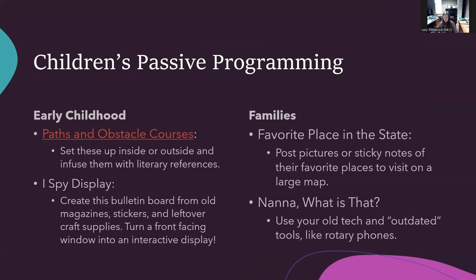Bonus idea: toddler play. Transform a simple table into a corner with bubbles, play dough, egg shakers, scarves, and puzzles — allowing kids and parents to make new friends at the library. For families, consider a favorite place in the state passive program. You can partner with your local tourism office to provide brochures, maps, and guidebooks as part of a display titled something like 'Where's Your Favorite Place in Our State?' Have patrons post pictures or sticky notes of their favorite places and create a display of related travel books. You could also put up a map for even more engagement, and this activity can be modified for social media through polls and resharing.